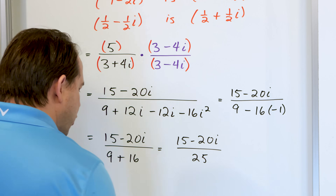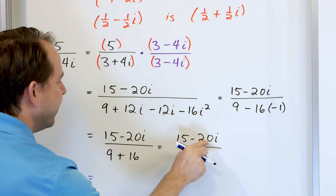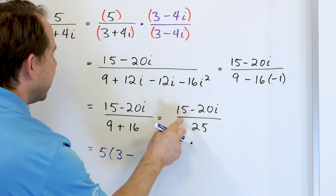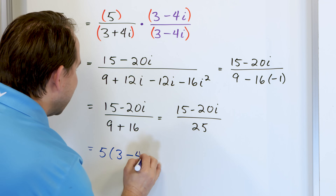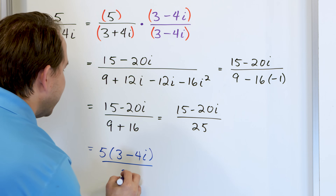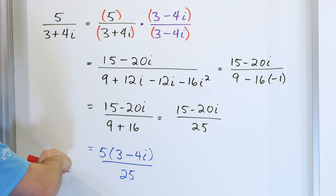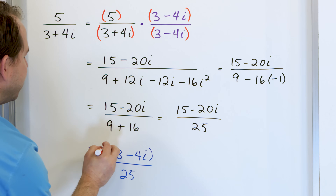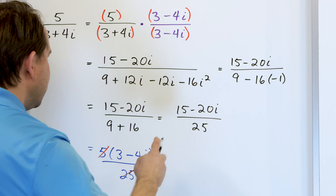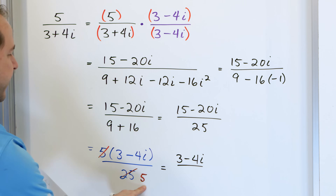What I want you to do on the top is factor out a five. Five times three is fifteen, five times four is twenty — and we have the i here — over twenty-five. Now that we've pulled out a five and we have twenty-five on the bottom, five divided by five is one and twenty-five divided by five is five. So the result is three minus four i over five.